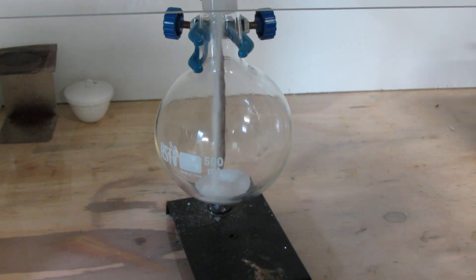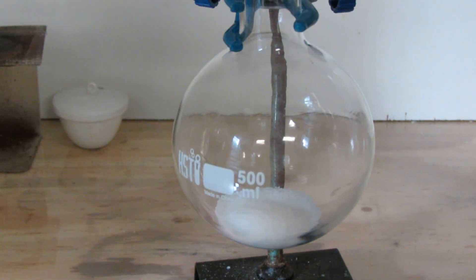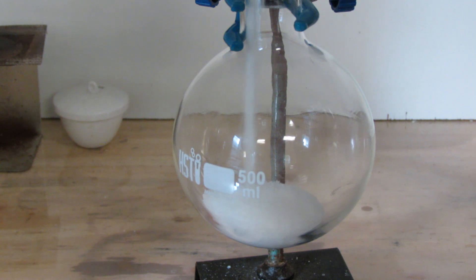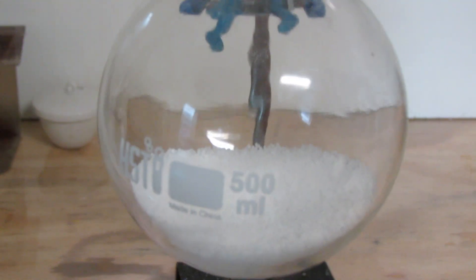Start by adding half of a mole of sodium chloride to a round bottom flask, then add a half of a mole of sodium hydrogen sulfate which is easily available as pH down to the flask, then mix the chemicals thoroughly.